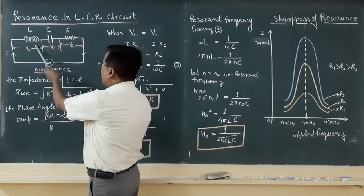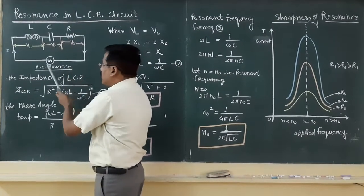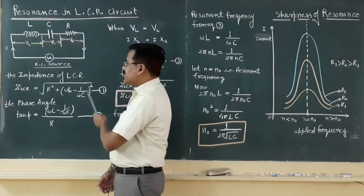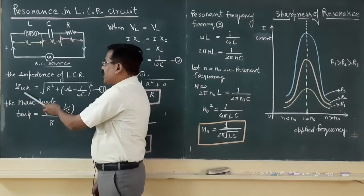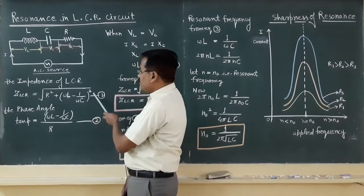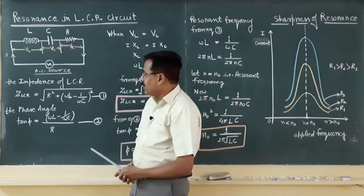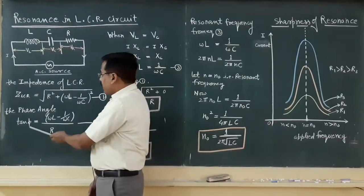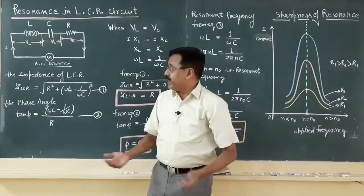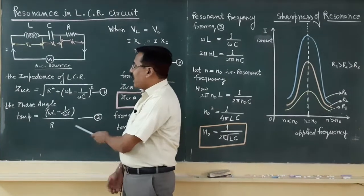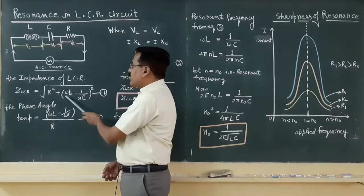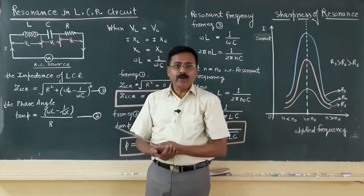This is the LCR circuit: inductor, capacitor, resistor. For this circuit, the impedance of LCR circuit is given by formula Z_LCR equals under root R square plus omega L minus 1 by C omega whole square. The phase angle is given by tan phi equals omega L minus 1 by omega C by R, equation number 2. Very clearly from these two equations, either impedance or phase angle, it's greatly affected by relation between omega L and 1 by omega C.